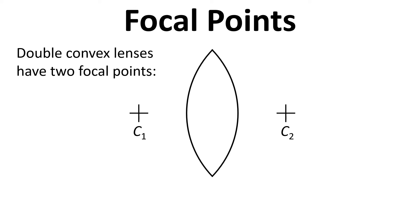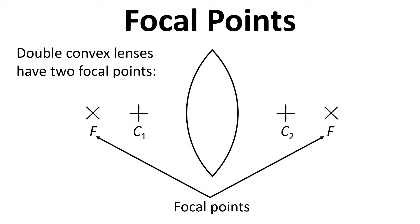To start with I'm going to talk about focal points. For a double convex lens there are two focal points. What's shown are the two centres: centre one, and we use a radius from that to draw the back surface, and then from centre two we use a radius to draw the front surface. In addition to this we have a focal point in front of the lens and behind the lens.